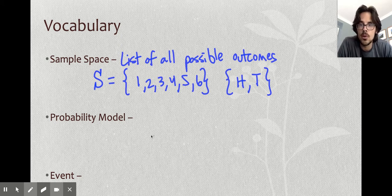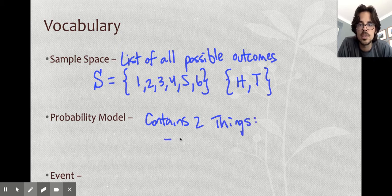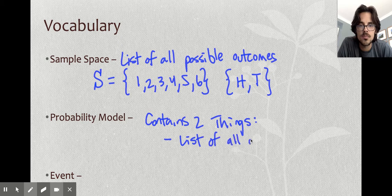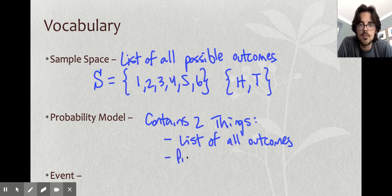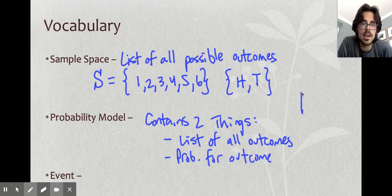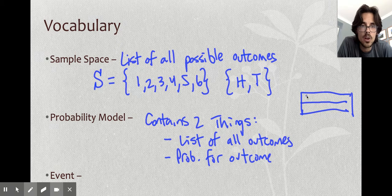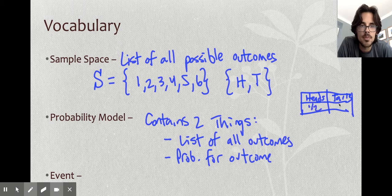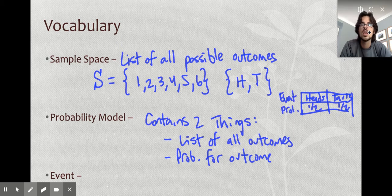A probability model is going to be a very useful thing to us here. It contains two things. Whenever you have a probability model, you're going to have a list of all outcomes, so basically your sample space, everything that can happen, and then you're going to have the probability for each outcome. If I was going to design a very basic probability distribution, a lot of times you'll see these as tables. I could have a coin example where I have heads and tails, and then probability is a half for each.